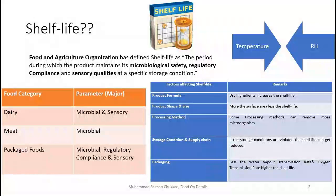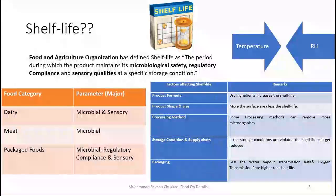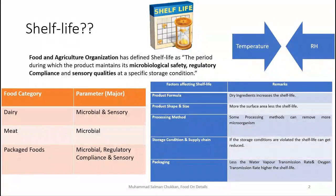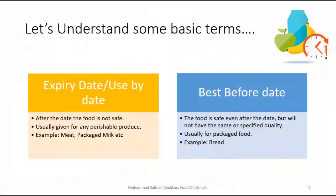Selection of a simple, fast, and reliable parameter is the first and foremost step for a successful shelf life study. For example, for a meat product the major parameter to focus on during shelf life would be microbial safety rather than regulatory or sensory attributes. Whereas for a packaged product, it includes microbial safety, regulatory compliance, and sensory attributes. These parameters are to be selected according to food type.